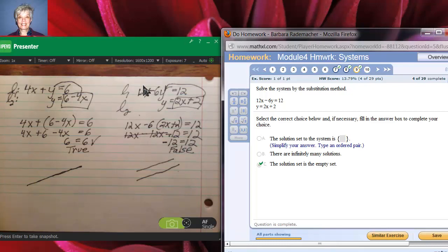If your letters disappear, if your variables vanish, and you have a false numerical statement, then that's indicative of parallel lines that are inconsistent. It's an inconsistent system, no solution. So you're going to kind of have to memorize that.